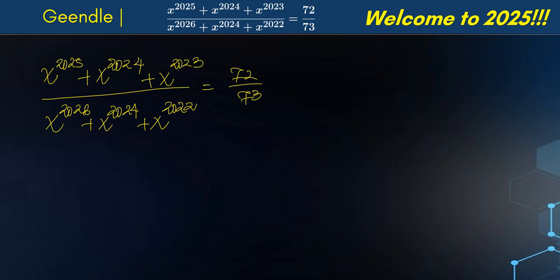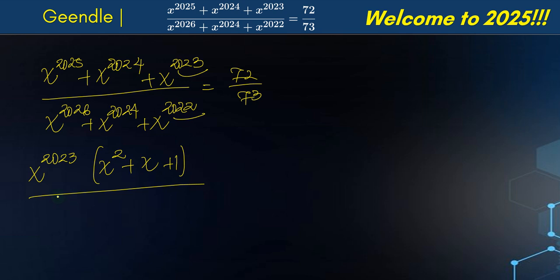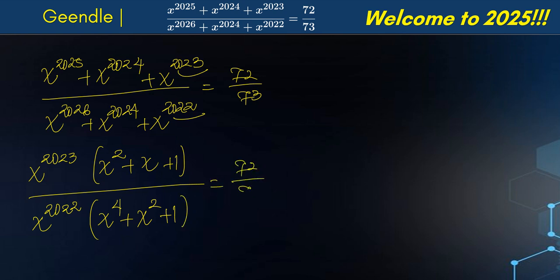I'm going to factor out the lowest power in the numerator and the lowest in the denominator. In the numerator we factor out x to the 2023, which multiplies x squared plus x plus 1. In the denominator we factor out x to the 2022, which multiplies x to the 4 plus x squared plus 1. This equals 72 divided by 73.